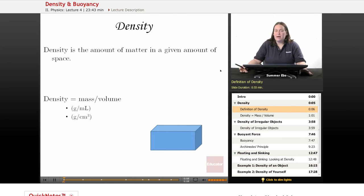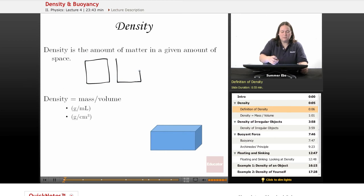Density is the amount of matter in a given amount of space. It's based on how packed together the atoms and molecules in a substance are. For a given amount of space, let's say we're given the exact same amount of space, we have atoms or molecules of gases moving around in this space.